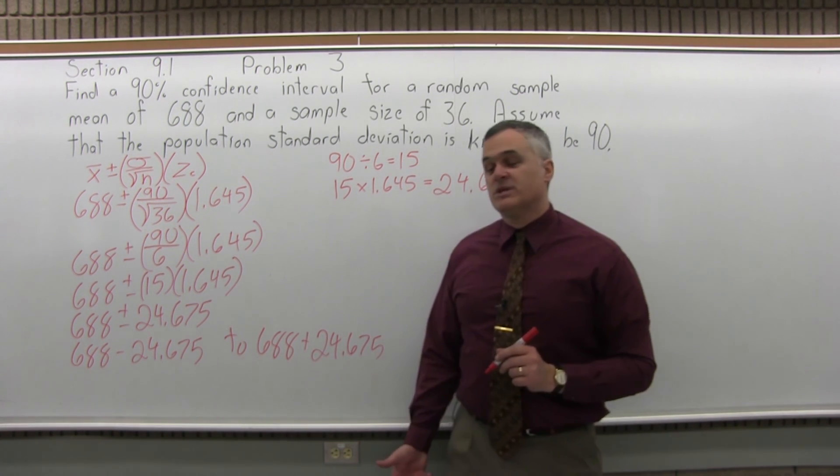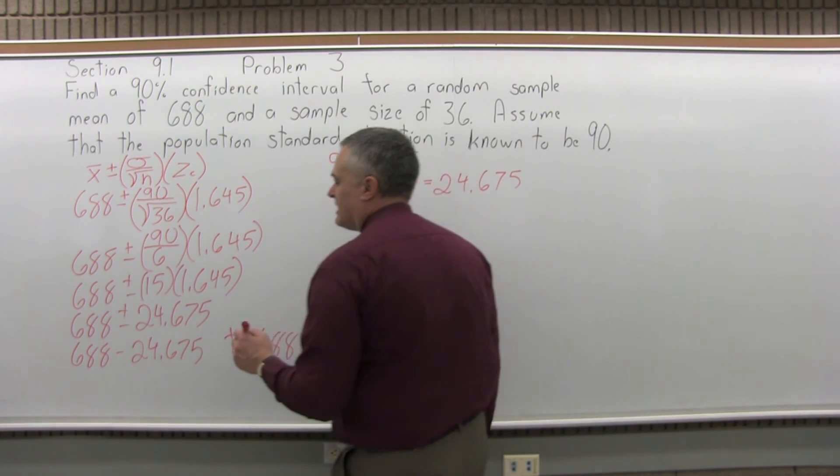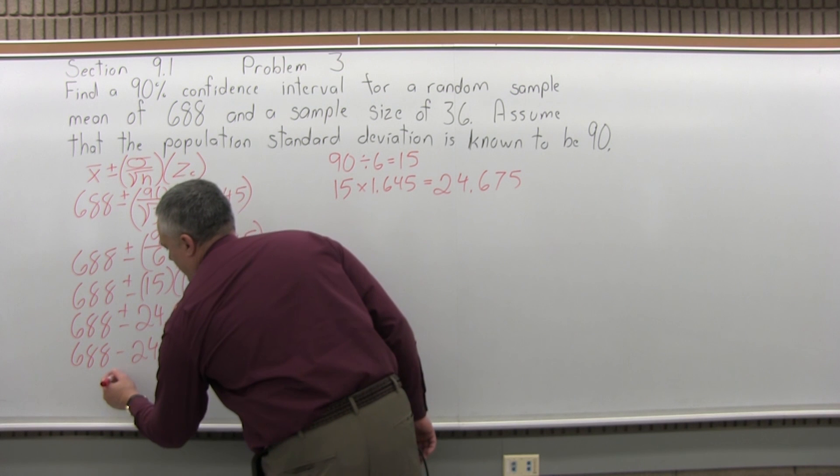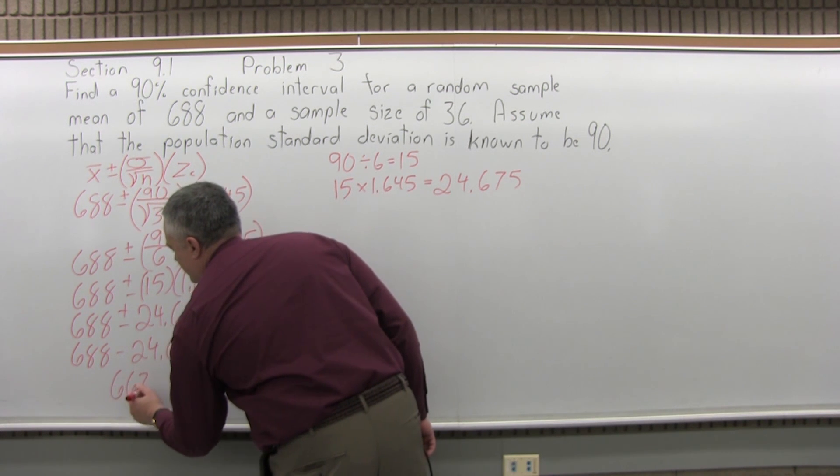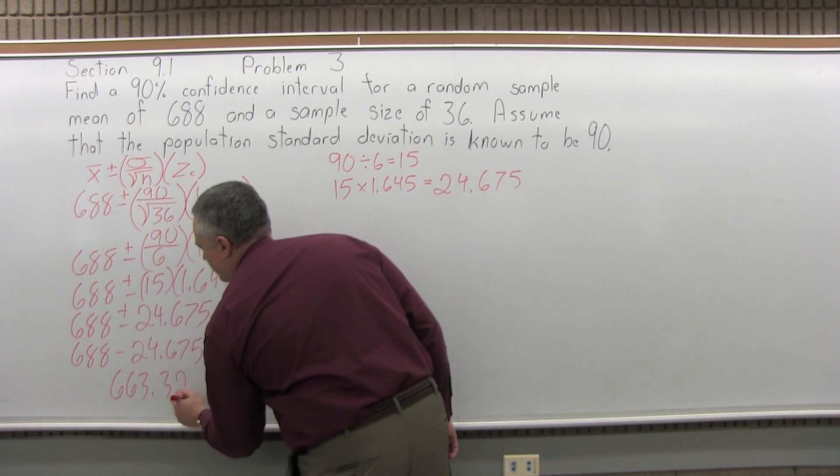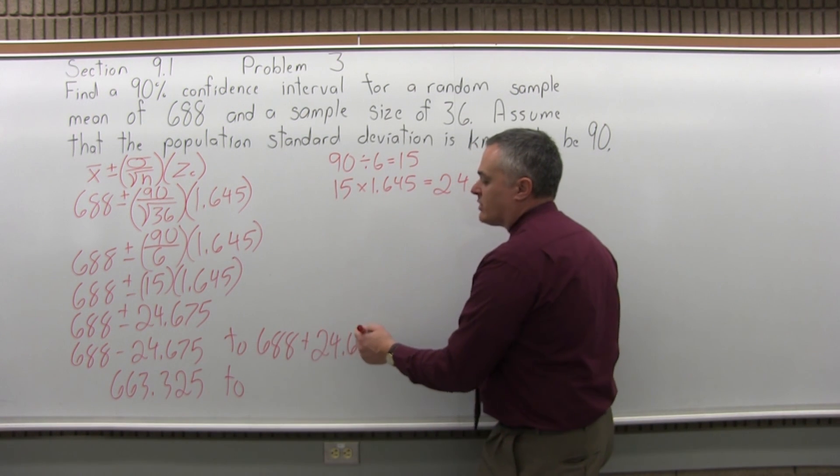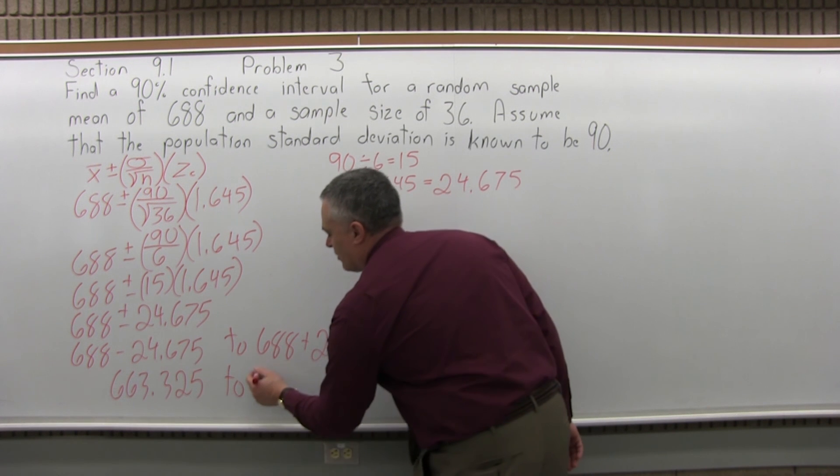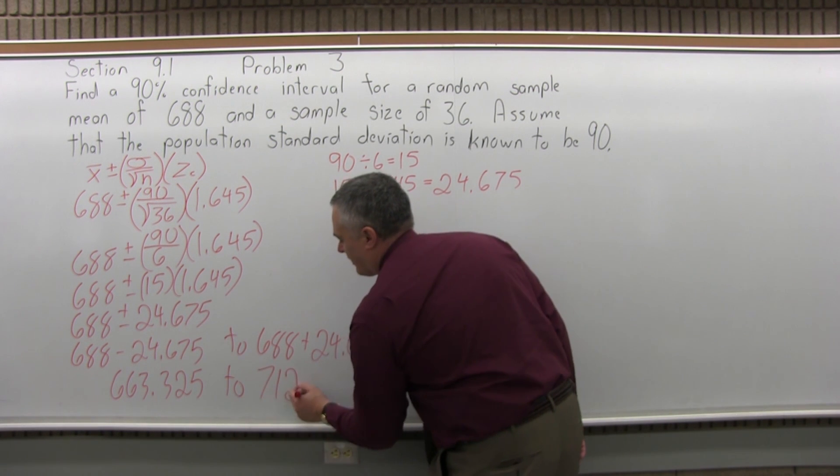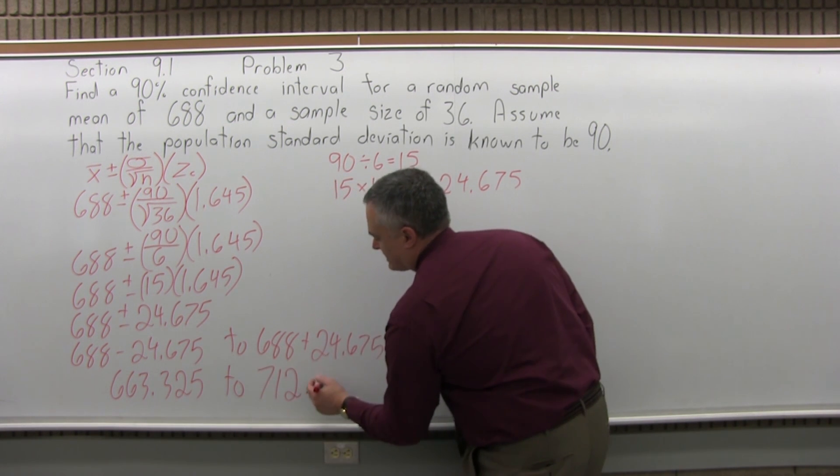So for the low end, when we subtract, 688 minus 24.675 will be 663.325. And the upper end of the interval, when we add 688 plus 24.675 will be 712.675.